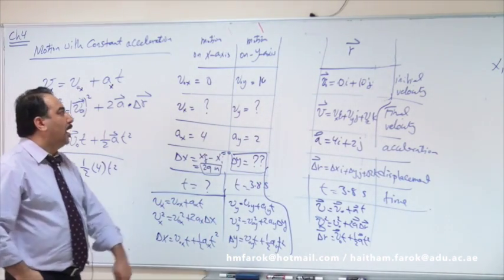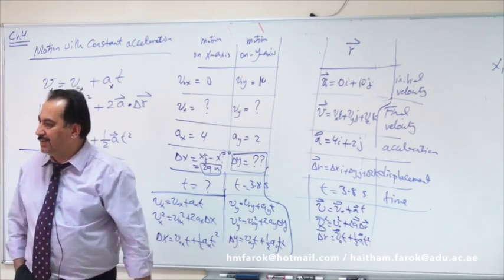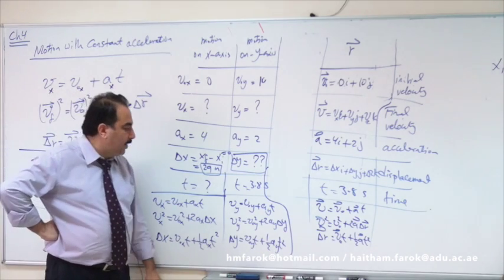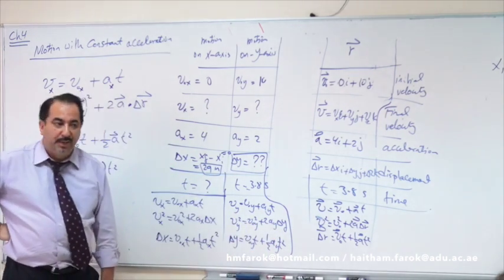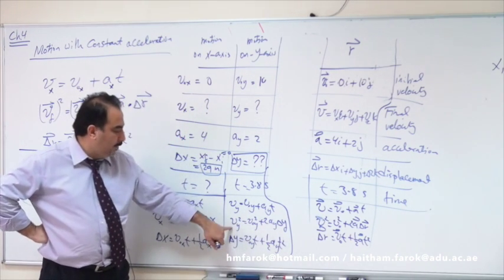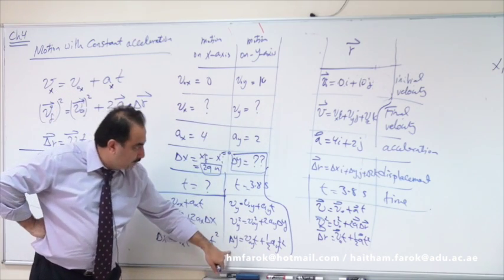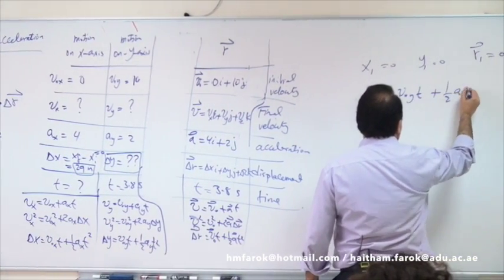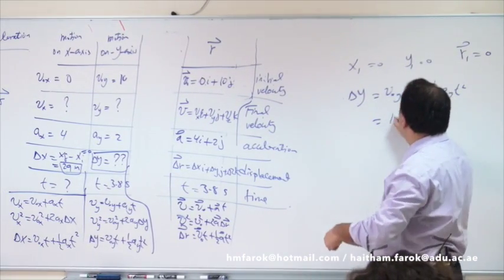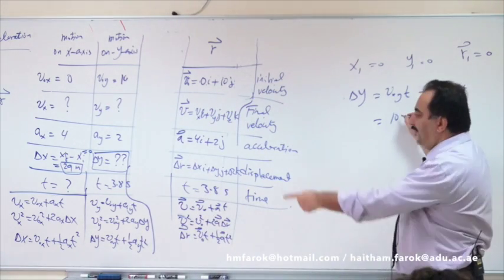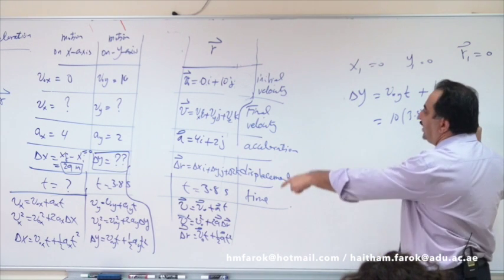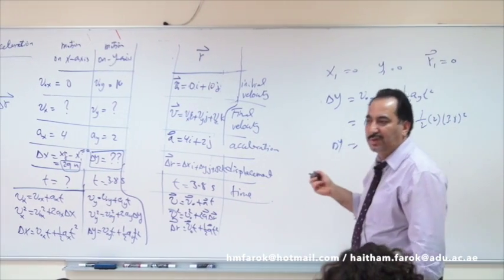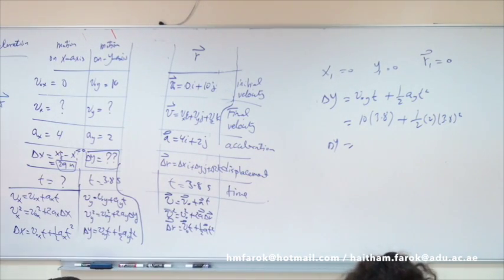Now the y column has three knowns: V₀y = 10, ay = 2, t = 3.8. Use the third equation: Δy = V₀y·t + ½ay·t² = 10(3.8) + ½(2)(3.8)². Calculate to find Δy = 52 m. That answers the question — the y-coordinate is 52 m.